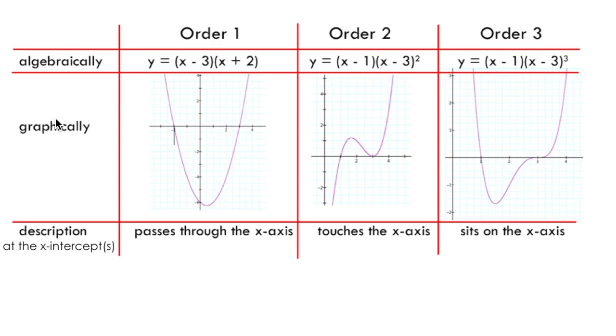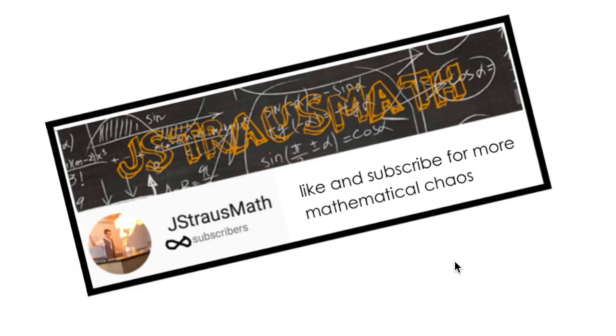So now you know how to use the order of an x-intercept to predict what the graph will look like at the x-intercept in question. Crosses, touches, sits on. If this video helped in any way, feel free to like and subscribe for more mathematical chaos, and as usual, thanks for watching.